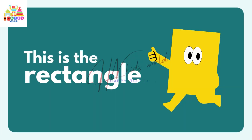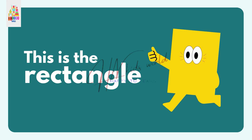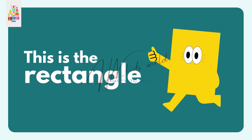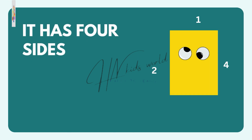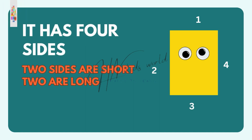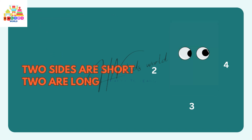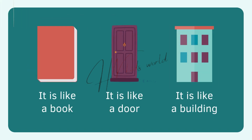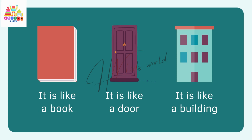This is the rectangle. It has four sides — two sides are short and two are long. It is like a book, like a door, and like a building.